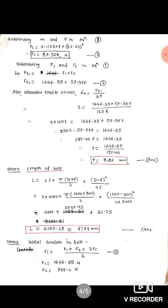Substituting mass and v in the fc equation: fc = 0.1125 × t × 22.62² = 57.56 × t Newton. Now substituting f1 and fc into ft1: ft1 = f1 + fc = 1646.35 + 57.56 × t — equation 2.